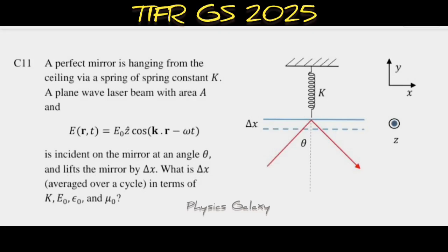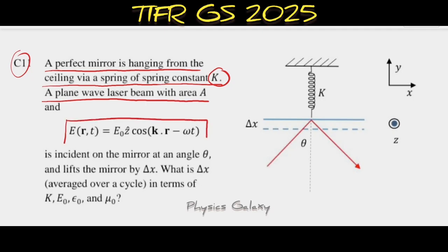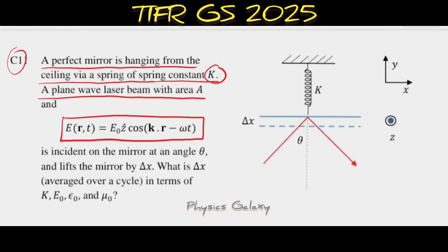Hello and welcome again. This is a good problem combining electrodynamics and classical mechanics. The problem is: a perfect mirror is hanging from the ceiling via a spring of spring constant K. A plane wave laser beam with area A and electric field E(r,t) = E₀ ẑ cos(k·r - ωt) is incident on the mirror at an angle θ and lifts the mirror by Δx. What is Δx averaged over a cycle?